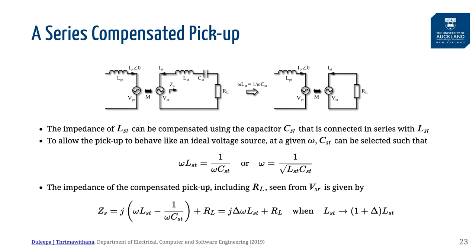To overcome the impedance of the pickup coil that limits the power transfer, we can compensate its impedance using a series-connected capacitor. In this case, we can think of the pickup as an ideal voltage source Vsr that supplies the load RL. However, in practice we cannot perfectly cancel out the impedance of the coil, so there will be some remaining impedance in series in this circuit.